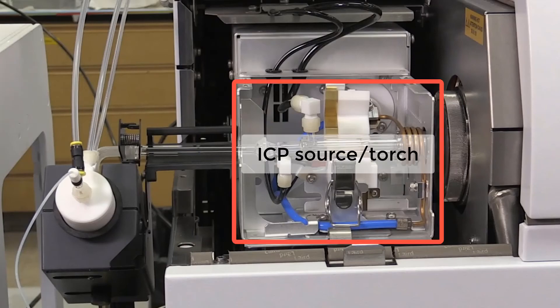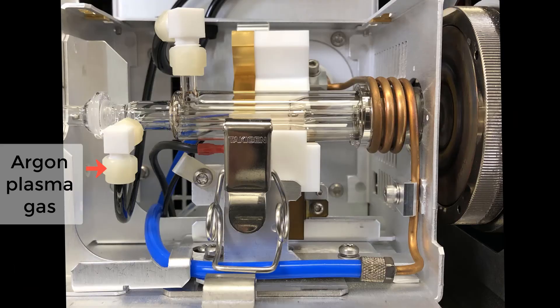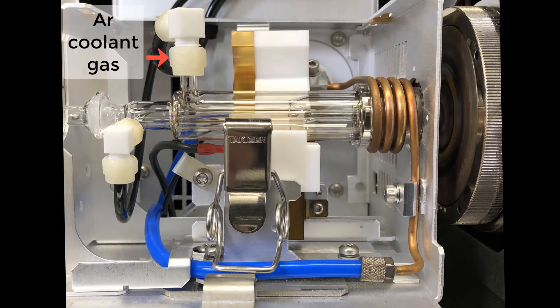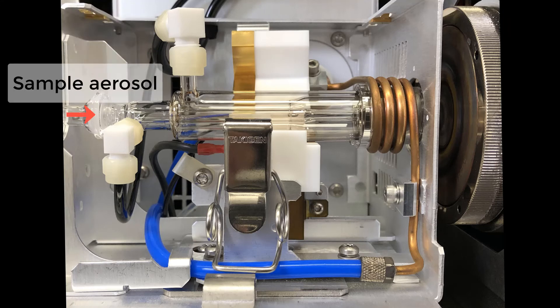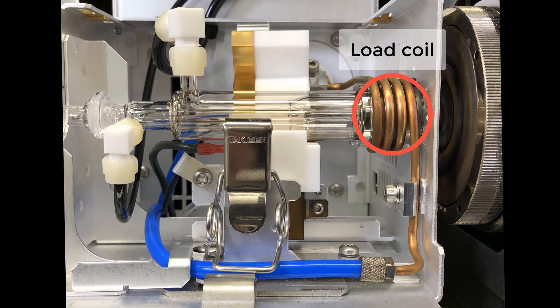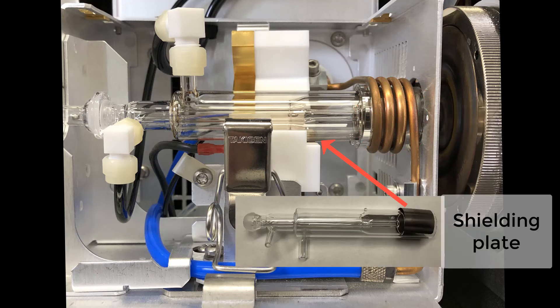Components of the torch include: argon source, coolant gas, sample introduction, load coil, bonnet, and shielding plate.